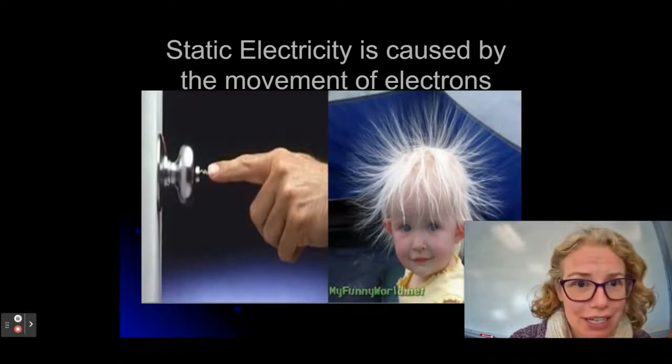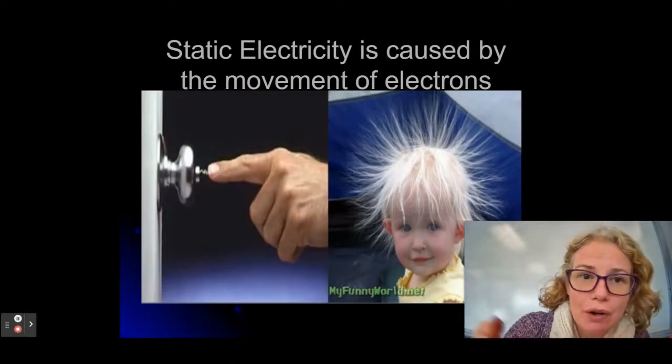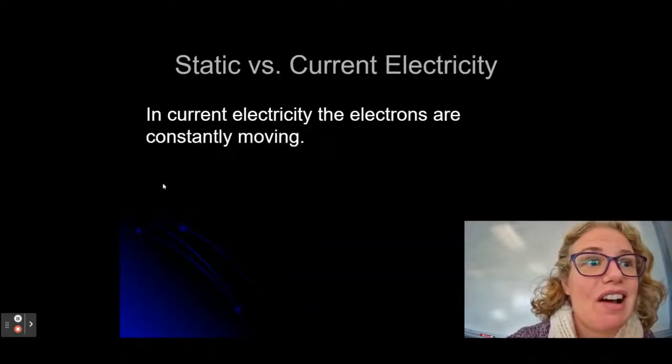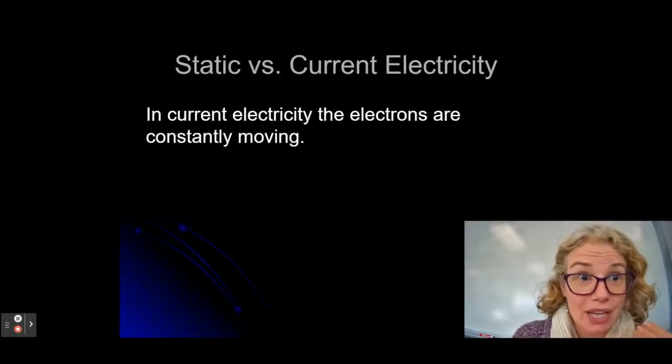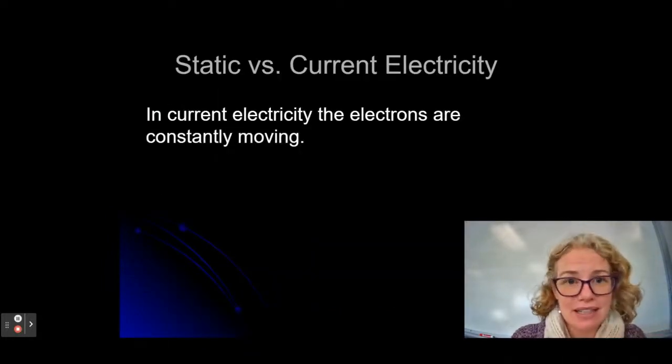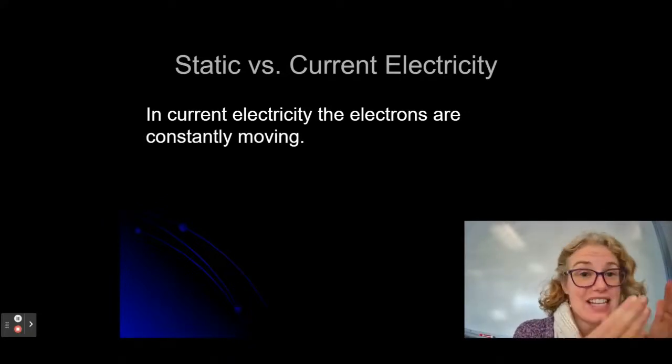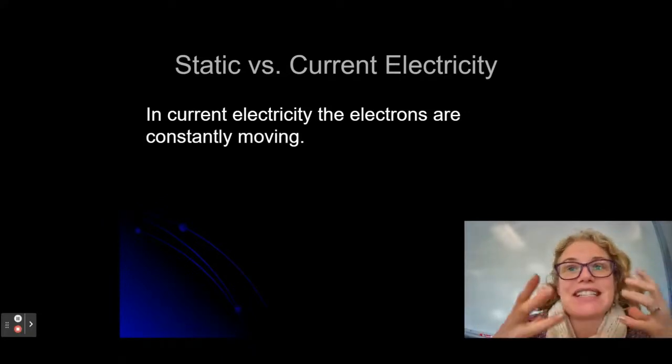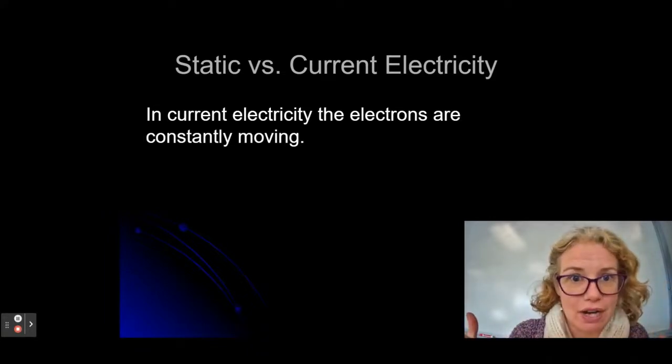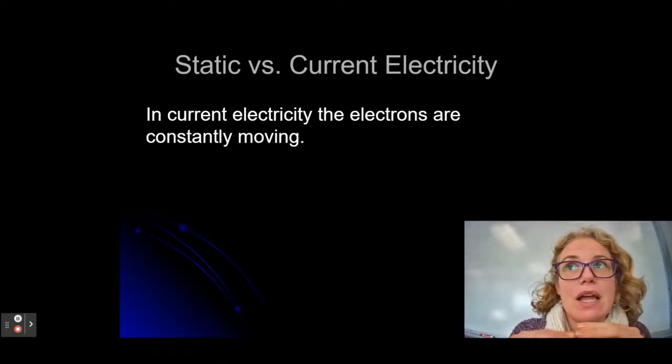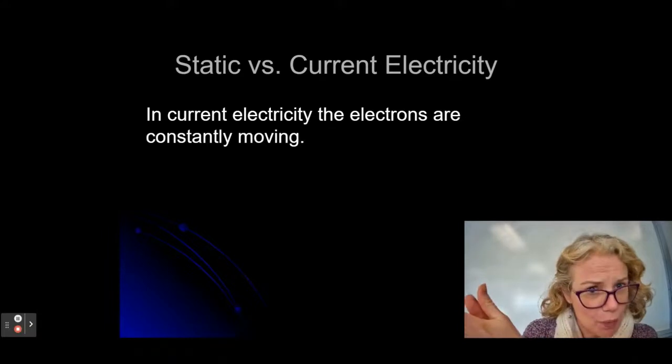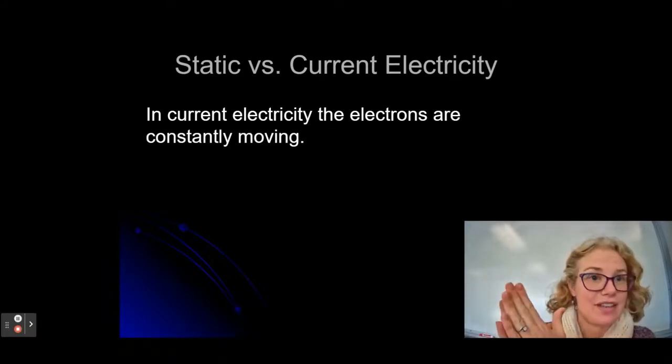So static electricity is caused by the movement of electrons, just like current electricity, except that in current electricity those electrons are always moving. But in static electricity, they move and then they stay there until something else happens. They're static, they're stationary, and then if they do move, they're going to move all at once, and then they're going to be done, and they're going to stay there again.